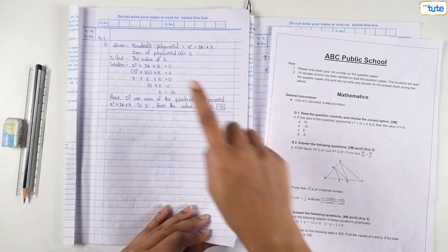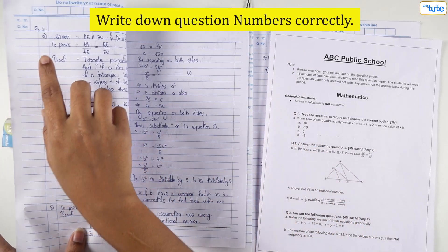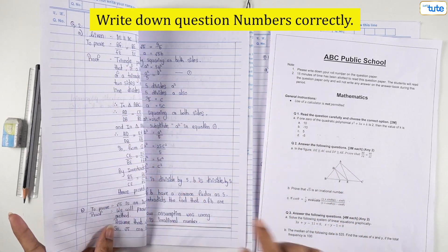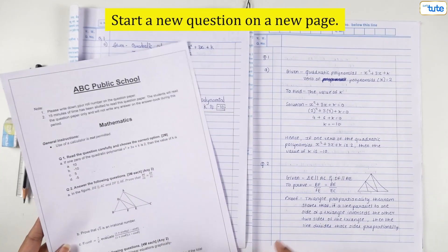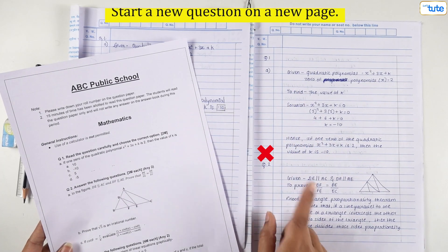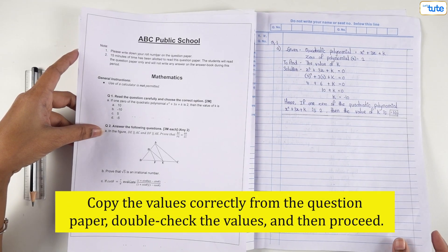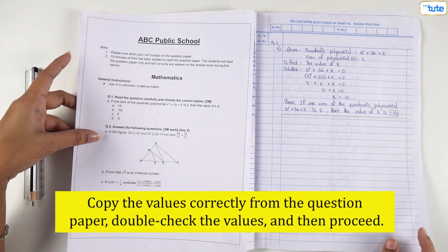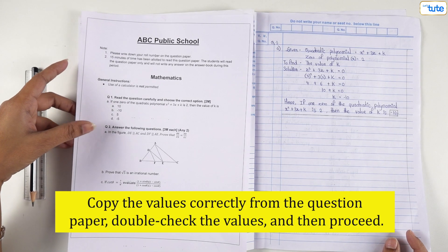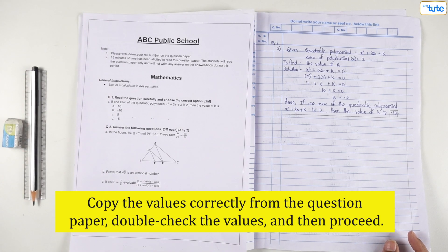Now, moving on with the paper presentation, write down the question number correctly from the question paper. Try starting every new question on a new page. Copy down the values correctly. Many students often tend to make this mistake. While taking down the values from the question paper, double check it and then proceed to solve it.